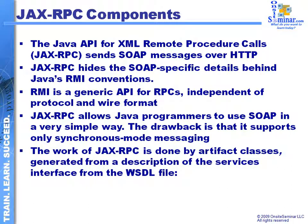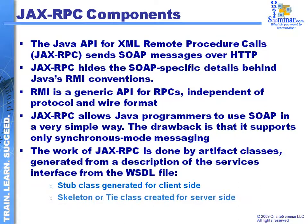The work of JAX-RPC is done by a couple of different types of generator classes. The description and creation of these classes comes directly from the WSDL files themselves. We have two different pieces: one is called the stub class, which is generated for the client side, and the other is called the skeleton or tie class, which is generated for the server side where the actual service resides. We use the WSDL file to create these stub and skeleton class components.